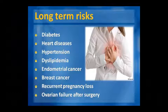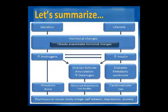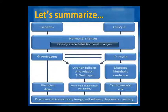Long-term risks associated with PCOS include diabetes, heart disease, hypertension, dyslipidemia, endometrial and breast cancer, recurrent pregnancy loss, and ovarian failure. Genetics, lifestyle, and hormonal changes contribute to increased androgen and insulin, leading to metabolic disturbances, menstrual irregularities, infertility, and psychosocial issues including poor body image, depression, and anxiety.